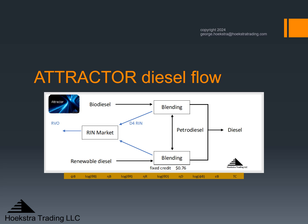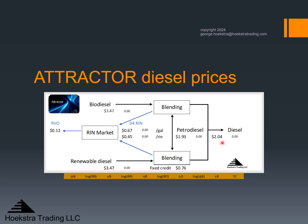For example, here we show a case where the cost to supply biodiesel and renewable diesel are both $3.47. The petrodiesel incremental marginal supplier's cost is $1.93, and the market price of diesel fuel paid at the wholesale level by truckers is $2.04 per gallon. It appears the petrodiesel supplier is making a profit of $2.04 minus $1.93, or $0.11. But the petrodiesel supplier is required to pay the RVO of $0.12, so to the nearest penny, the petrodiesel supplier breaks even.